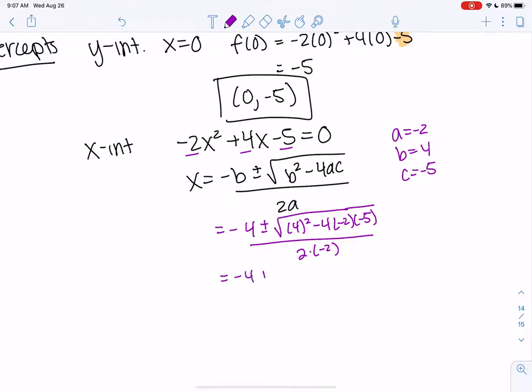So we're going to get negative 4 plus or minus 16, and then we get negative 40, all over negative 4. 16 minus 40, what's that? It's negative, so that'll be significant.